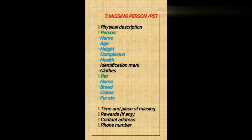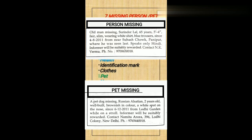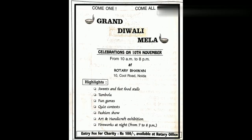The last category is missing person or pet. If it is a person, describe the name, age, height, complexion and health, identification mark, and clothes. If it is a pet, mention the name of the pet, breed, color, fur, etc. Then these details are common for both: time and place of missing, rewards if any, and contact address and phone number. With this, we have completed the classified advertisement section.